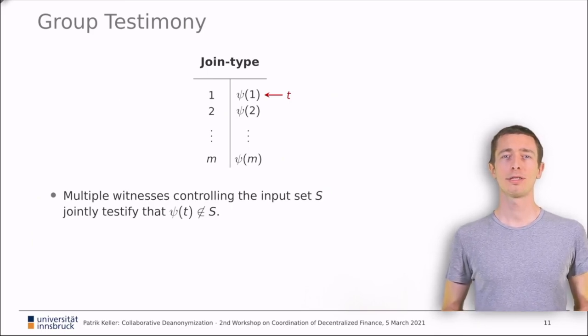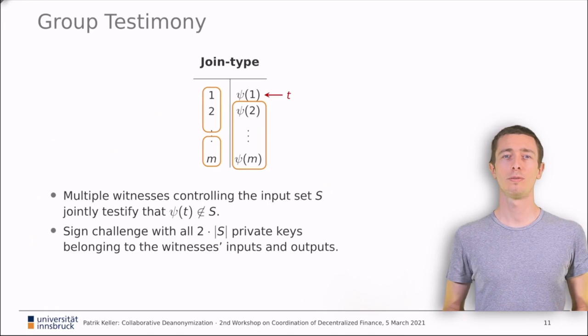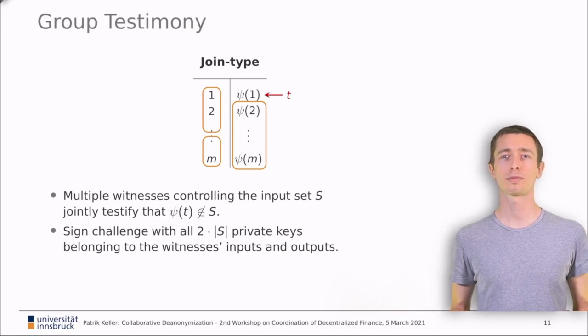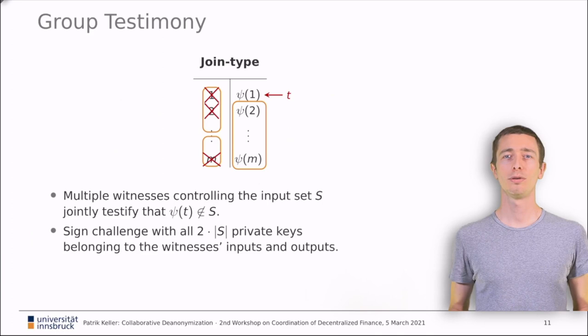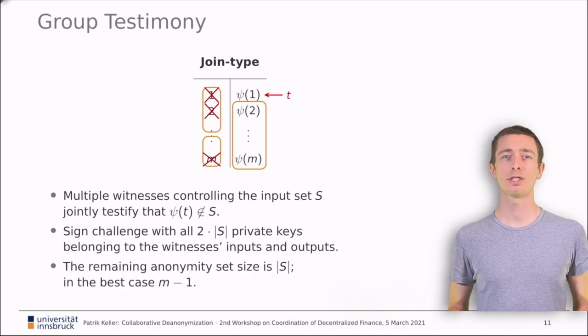For joint type transactions, it works as follows. Law enforcement establishes a communication channel between the witnesses. The public ledger records the public keys of all witnesses. Thus, they can communicate confidentially. Now, law enforcement provides a challenge to the group. Each witness signs the challenge with the private keys belonging to one input and one output. Then, the group sends the resulting testimony with two times m-1 signatures back to the police. By counting signatures, the police can infer which m-1 inputs belong to the m-1 outputs that are not the targeted output T. The remaining input must be associated with the targeted output T and the police learns exactly one link.